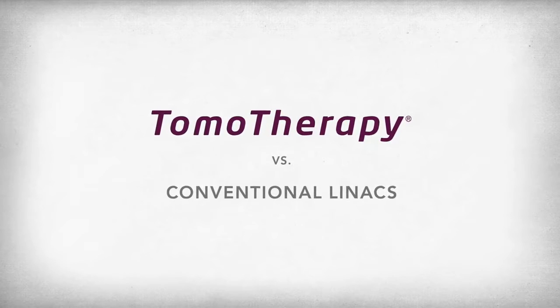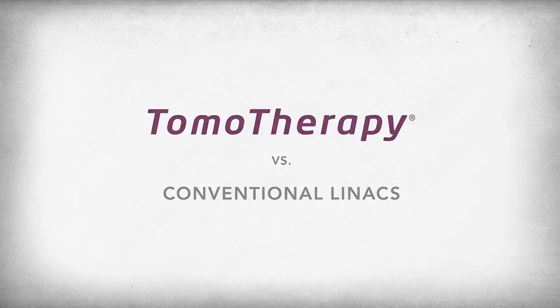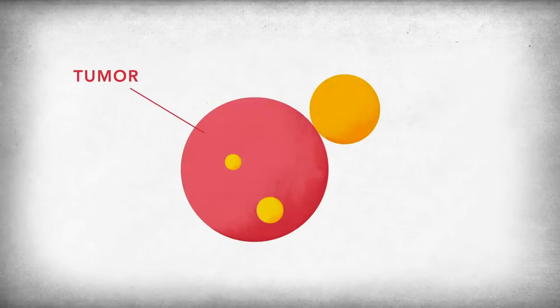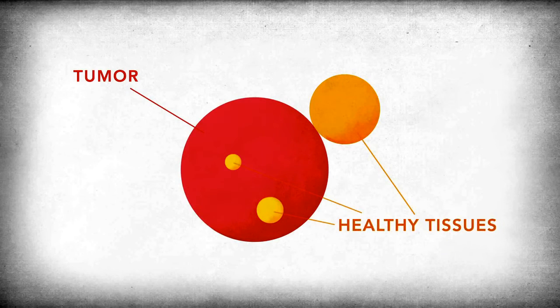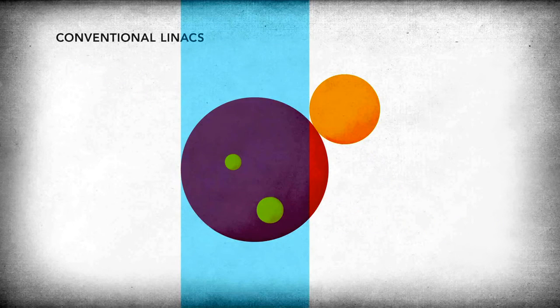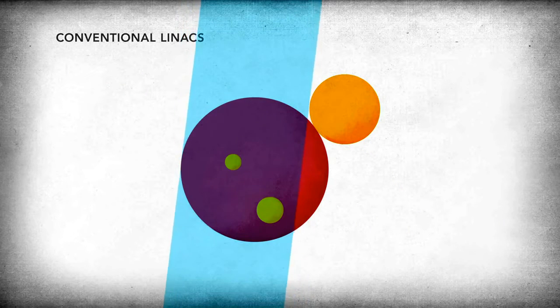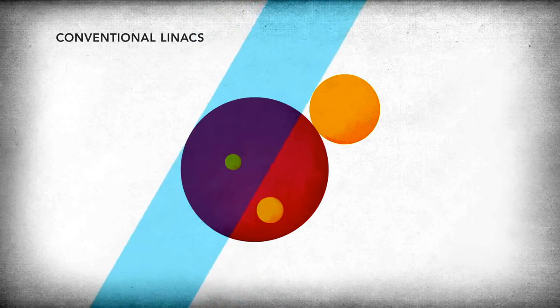Tomatherapy versus Conventional Linacs. Tumors are in or around healthy tissue. Conventional Linac systems have limited flexibility in irradiating the tumor while avoiding healthy tissue.